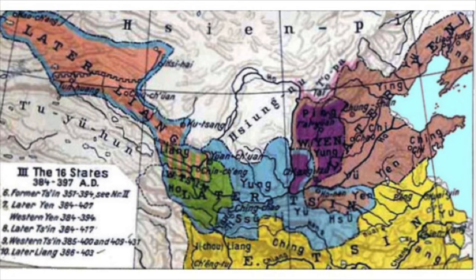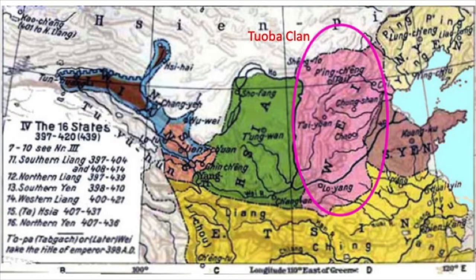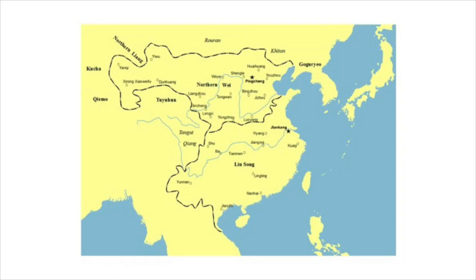Kingdoms like Later Yan, Later Qin, Western Qin, and Later Liang were established. These kingdoms fought against each other and some further fragmented into smaller pieces — all among the Sixteen Kingdoms. The last of the Sixteen Kingdoms was the Xia Kingdom, founded by the tyrannical Xiongnu king Helian Bobo. However, none of those small kingdoms would be the eventual winner. The Tuoba clan of Xianbei people established their own kingdom in 386, and would eventually defeat everyone else in the north, establishing the Northern Wei Dynasty in 439.